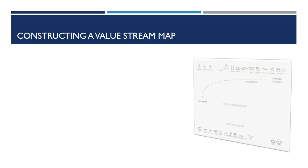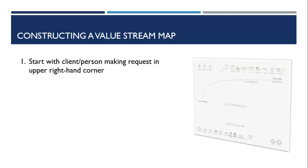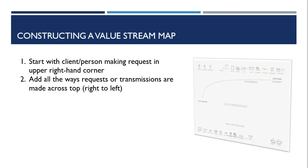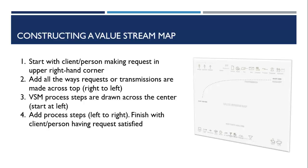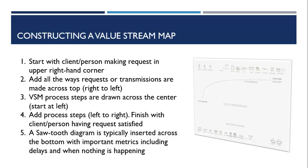The following are instructions for constructing the value stream map. First, start with the client person making the request in the upper right-hand corner of the VSM form. Next, add all of the ways requests or transmissions are made across the top from right to left. Then, draw the VSM process steps across the center of the page starting at the left-hand side, adding process steps from left to right and finishing with the client person having the request satisfied. Finally, a sawtooth diagram is typically inserted across the bottom section with important metrics including delays and when nothing is happening.